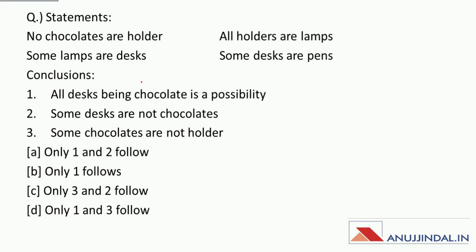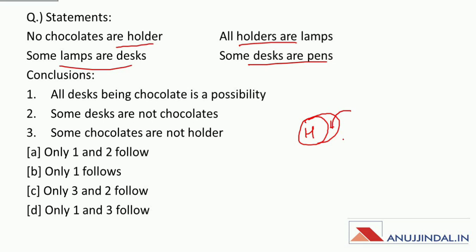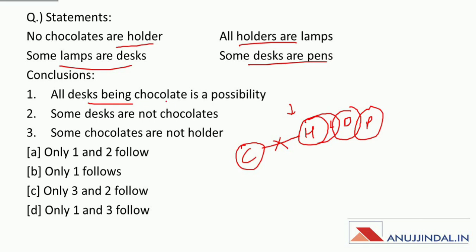Next question: No chocolates are holder, all holders are lamps, some lamps are desk, and some desk are pens. Let us draw the Venn diagram. So this is the basic Venn diagram. Now let's check the conclusions. All desks being chocolate is a possibility — sara ka sara desk chocolate ho jahe, kya ye possibility hai? Yes, because there is no direct relation between desk and chocolate. If there is no direct relation between two elements, then all possibilities are true. Which means this is correct.